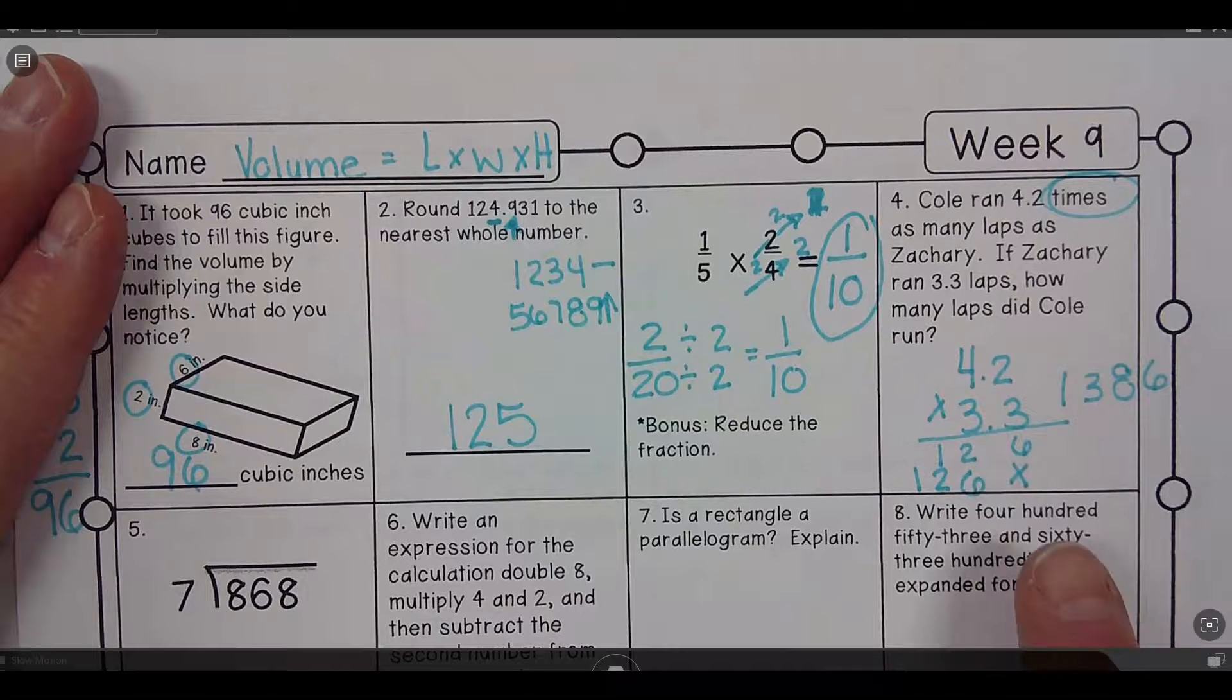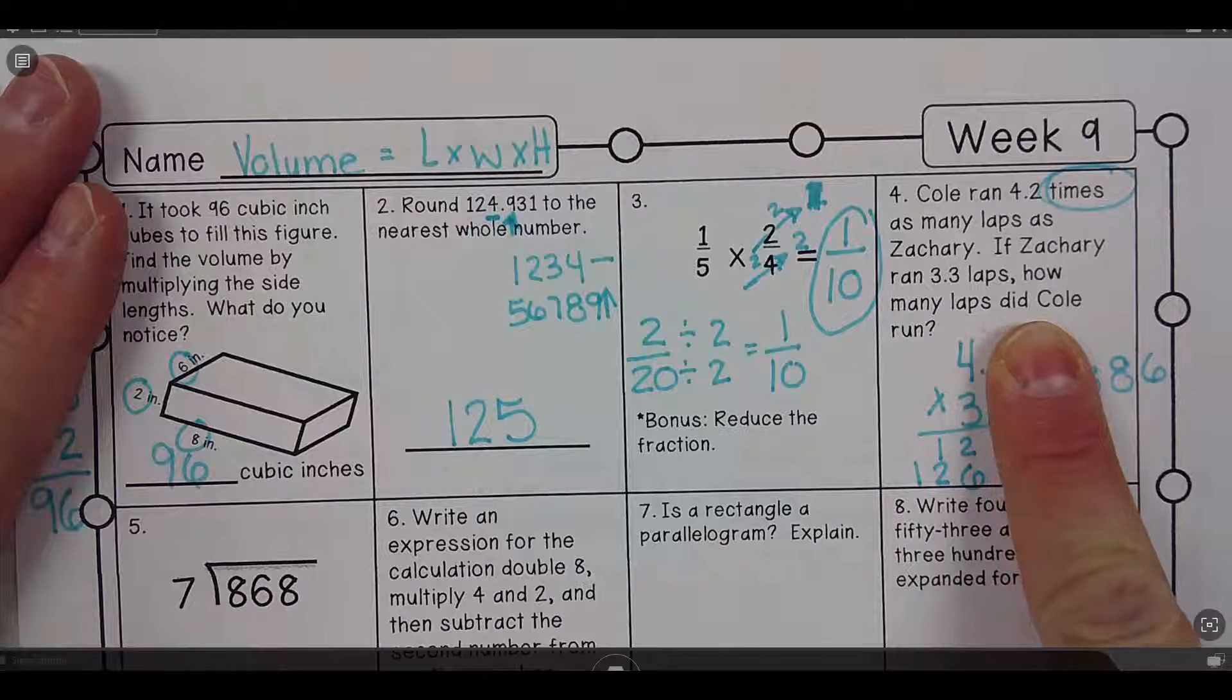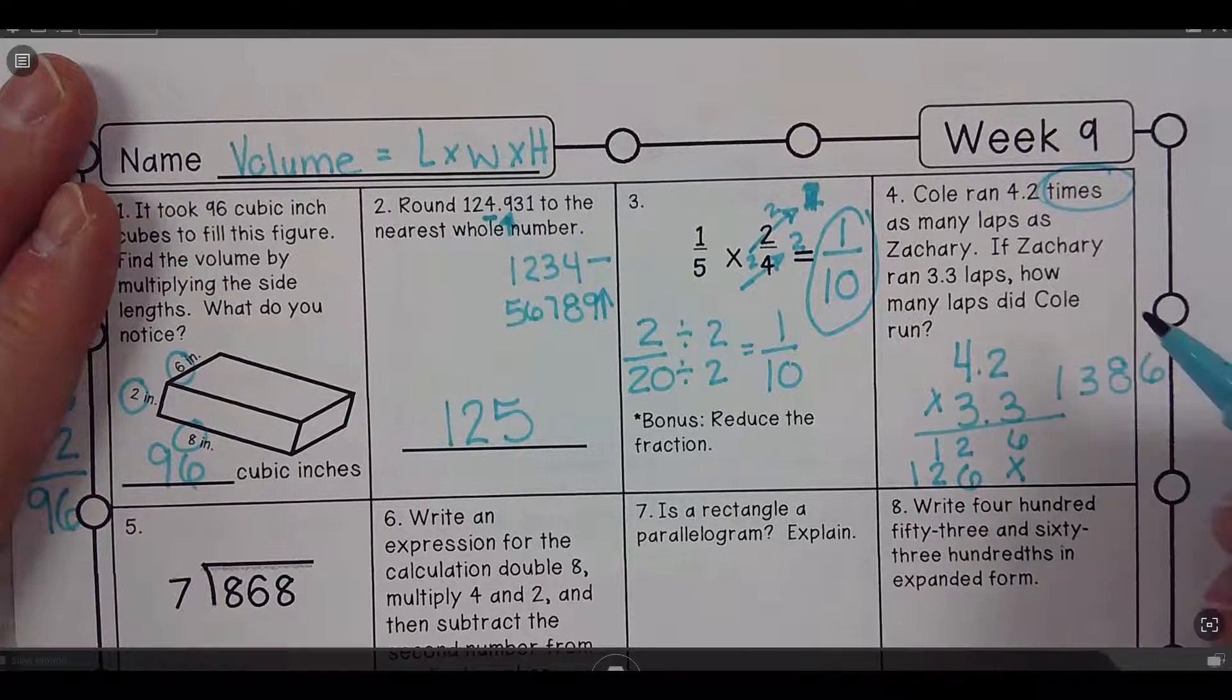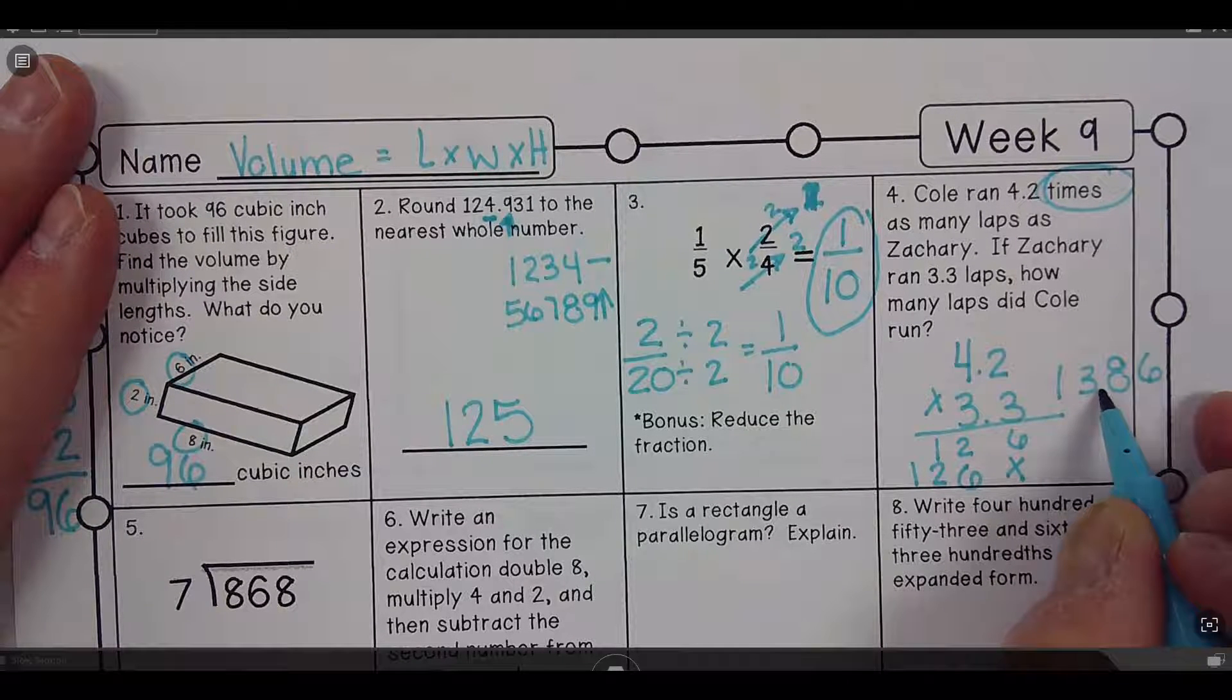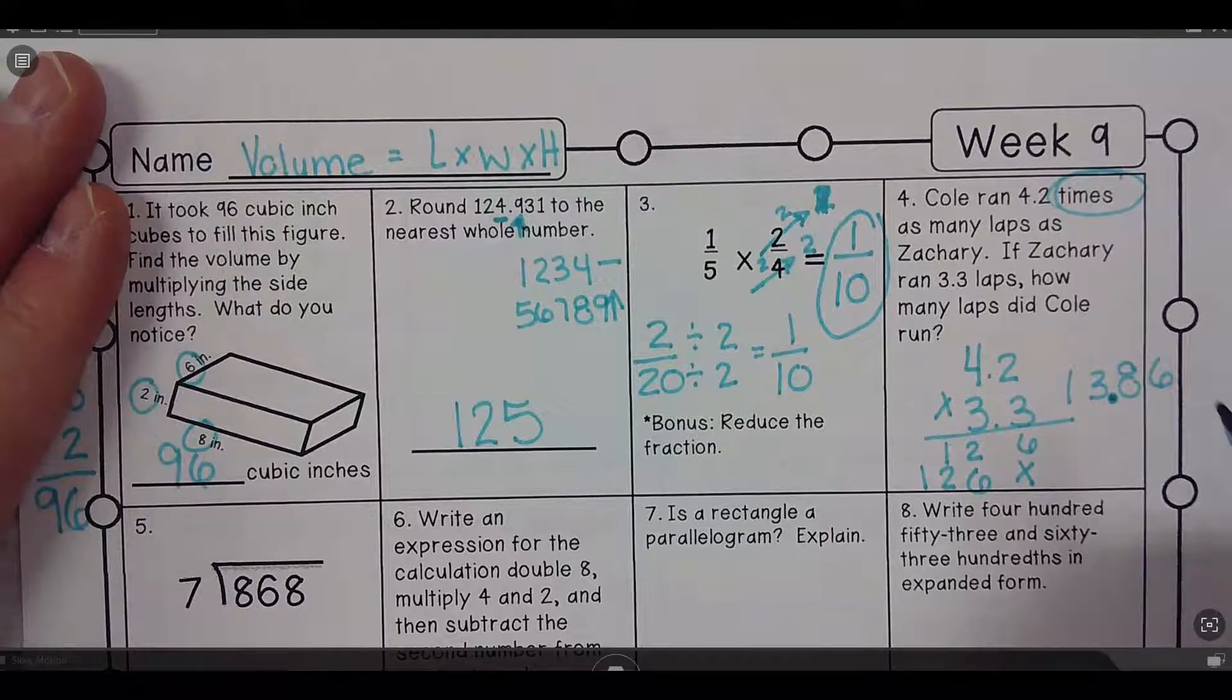Now this is the trick Mr. Ostranger taught me and he said if you put your finger over the decimals you're gonna get a good ballpark. 4 times 3 is 12. Well, where would the decimal go? It'd go right there. 4 times 3 is 12, so it'd be 13.86 laps.